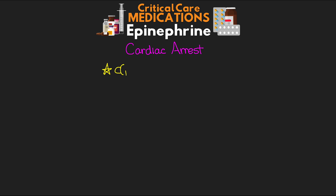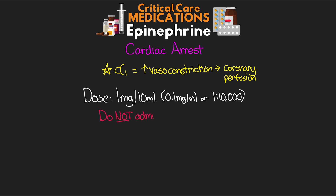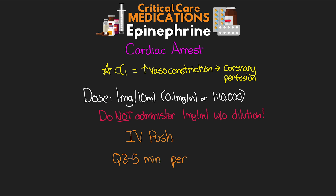The main benefit of epi in cardiac arrest is going to be its alpha-1 activation, which is going to increase vasoconstriction and thus help coronary perfusion. Our dose in this situation is going to be 1 mg in 10 mL, giving us a concentration of 0.1 mg per mL — a total dose of 1 mg, also referred to as our 1-to-10,000 dose. You'll find this either as a pre-mixed rapid injection syringe or manually prepared. If you are mixing this up manually, do not administer the 1 mg per mL without diluting to the 0.1 mg per mL concentration. Give this IV push, with a frequency of 1 mg every 3-5 minutes per our ACLS.